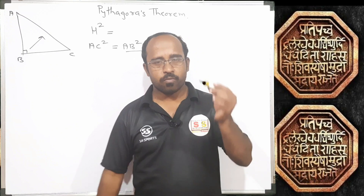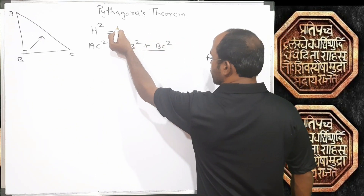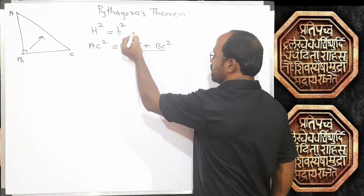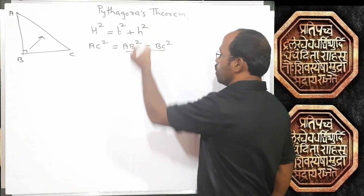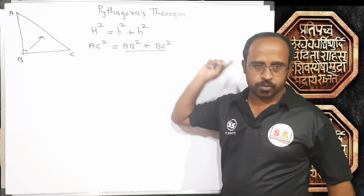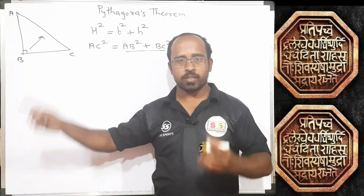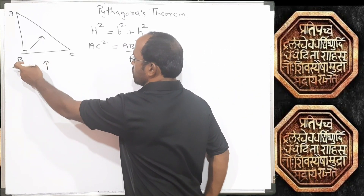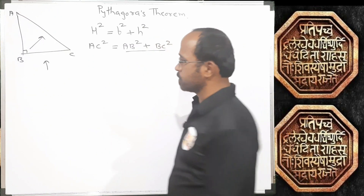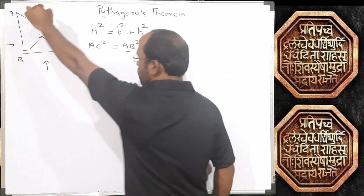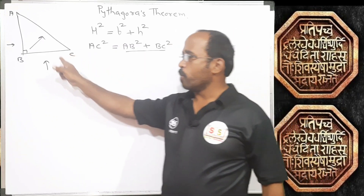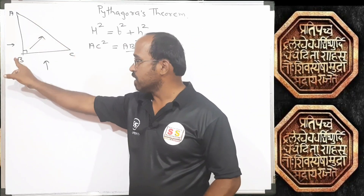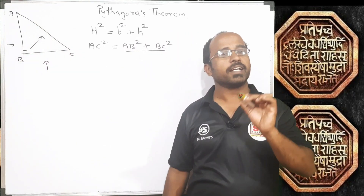Among these remaining two sides, one side is considered as base, denoted with small letter b, and one side is considered as height, denoted with small letter h. So, hypotenuse squared equals base squared plus height squared. Which of AB and BC is base and which is height? That is a relative concept — it depends on your perspective. But the hypotenuse is always fixed: it is the side in front of the 90 degree angle.